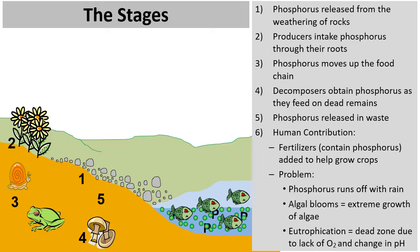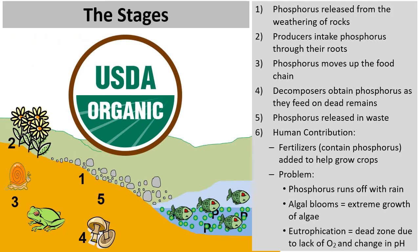As aquatic plants begin to die, the bacteria in this body of water begin to break down all the dead plants, and in doing so they gobble up the oxygen. The fish in this body of water actually suffocate from a lack of oxygen because the bacteria have consumed it all. Also, the bacteria give off carbon dioxide in the decomposition process, which can alter the pH of the water, creating this dead zone.